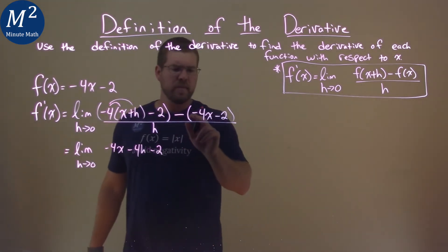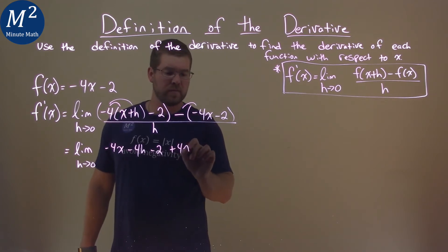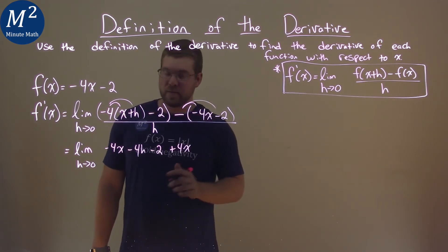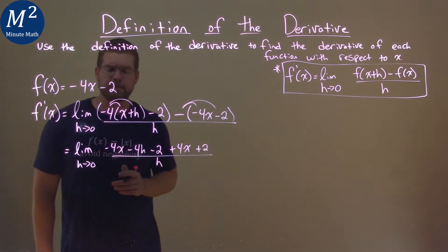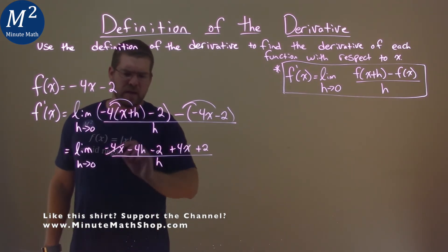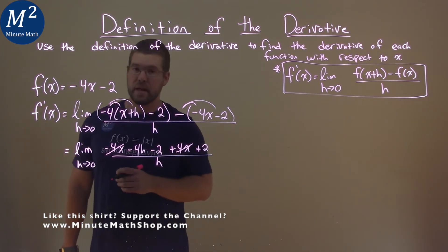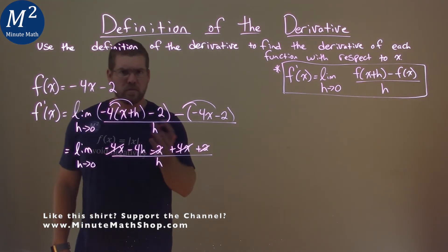Now this minus sign and this one here, when we distribute that out, cancels out, and we have plus 4x. And this minus sign and that minus sign is a plus 2. All that goes over just an h. Now if we look at the numerator here, there's some things that I can cancel. Negative 4x here and a 4x cancel out, and negative 2 and a positive 2 cancel. So what are we left with?